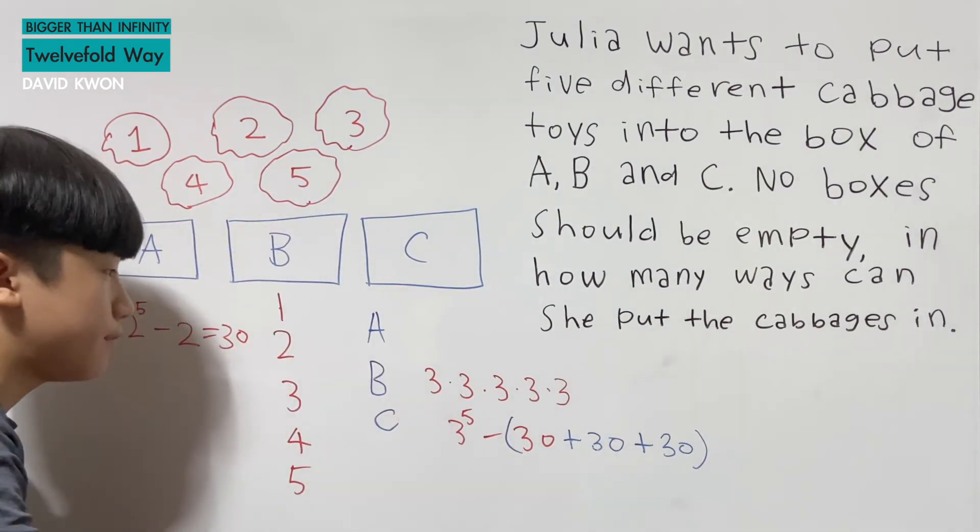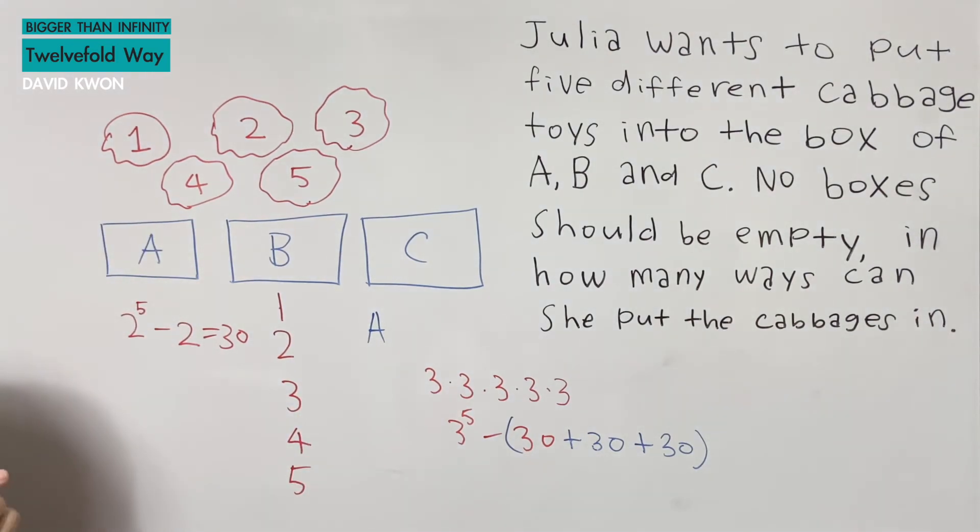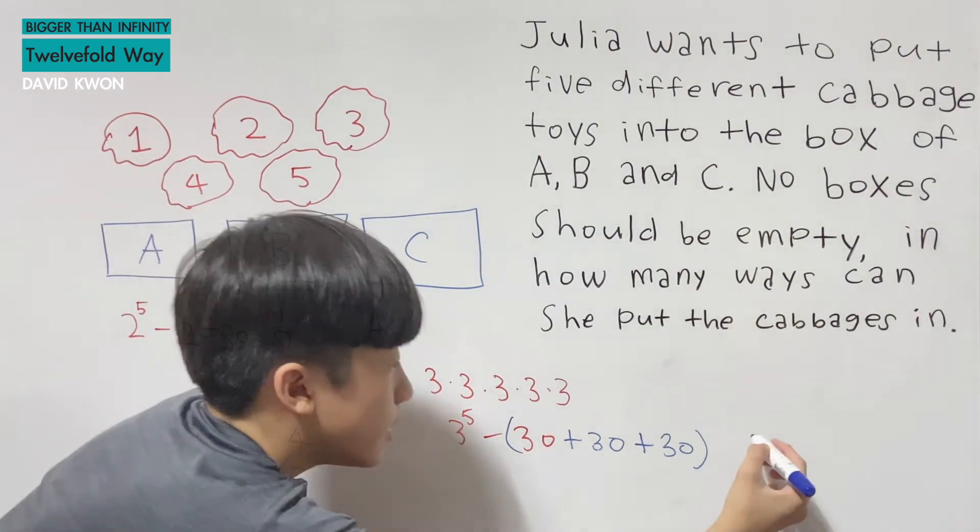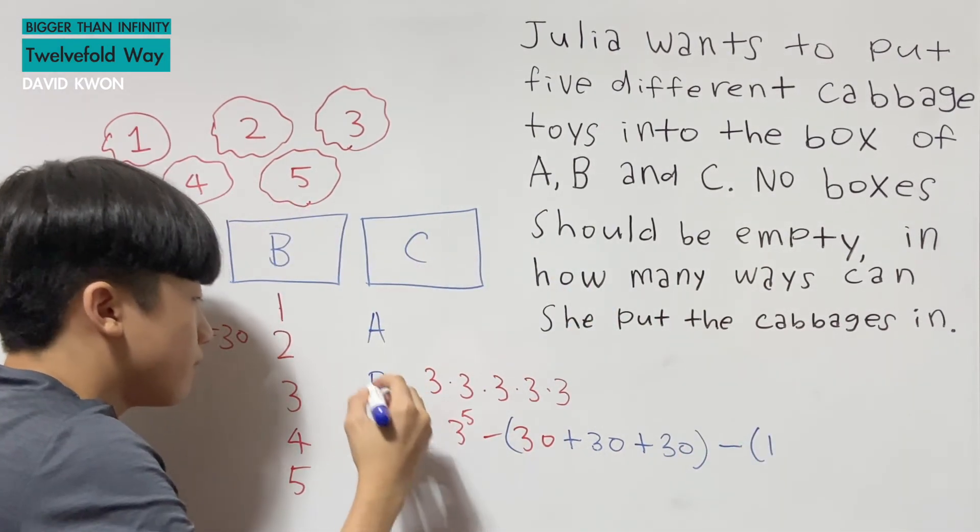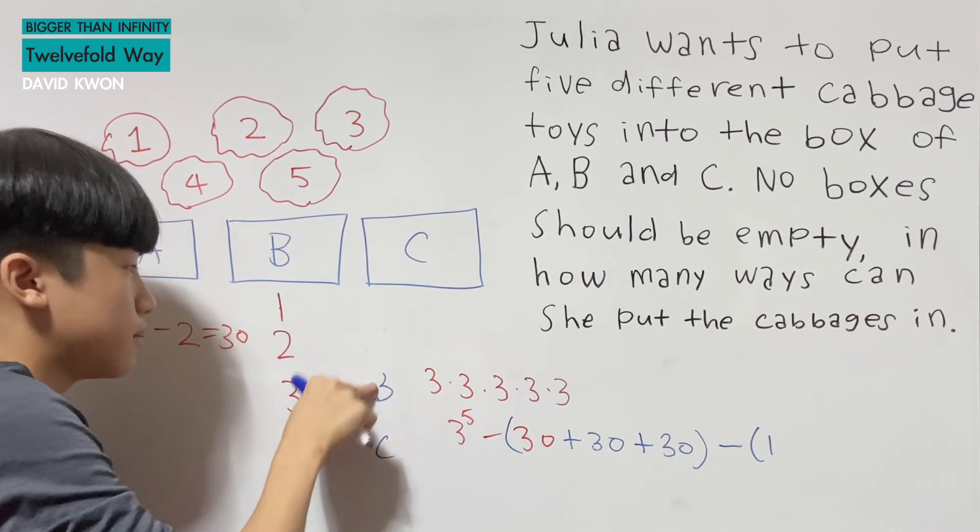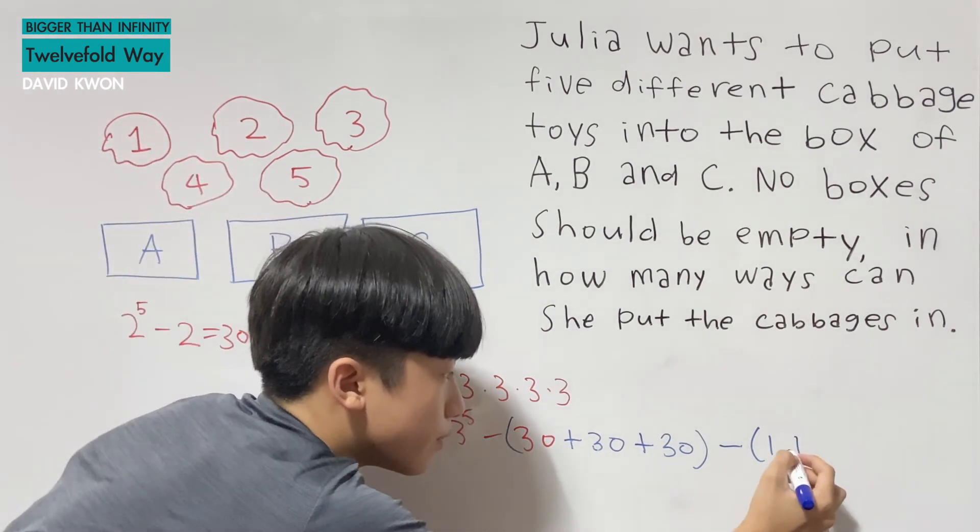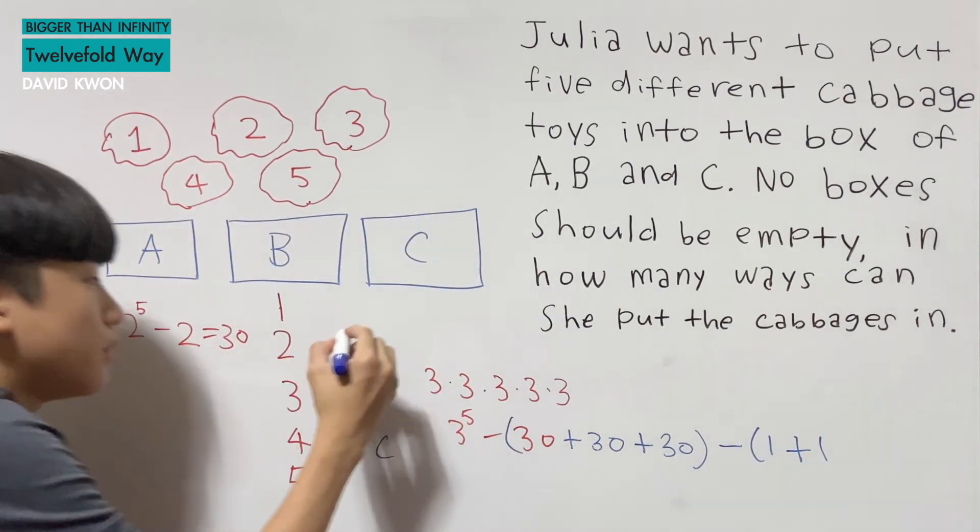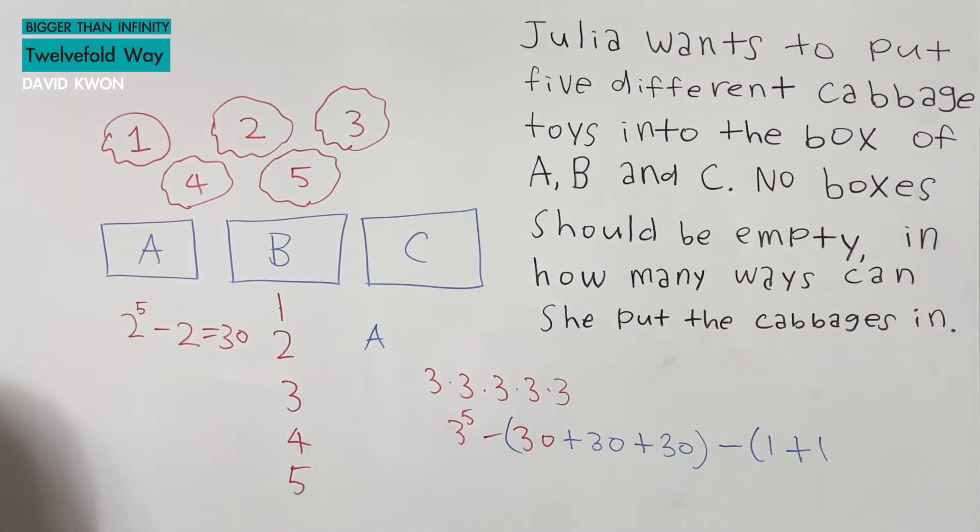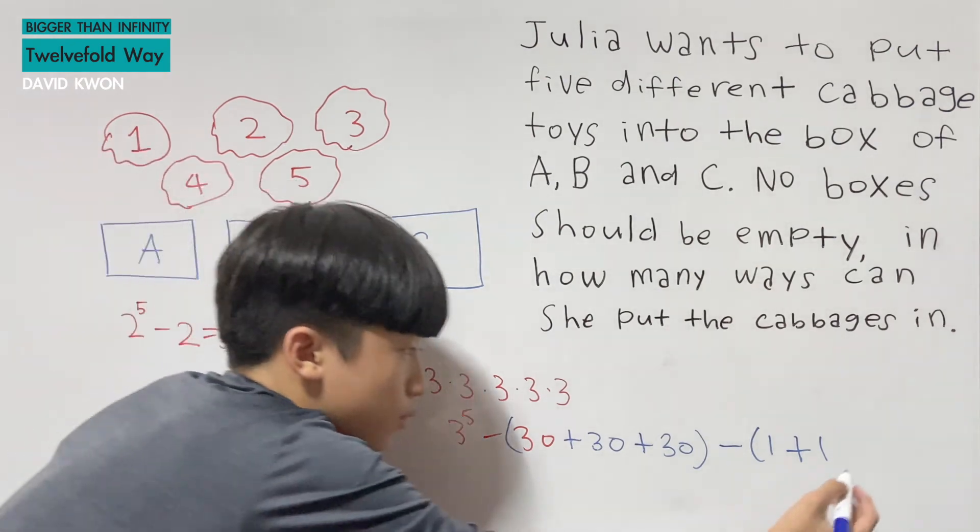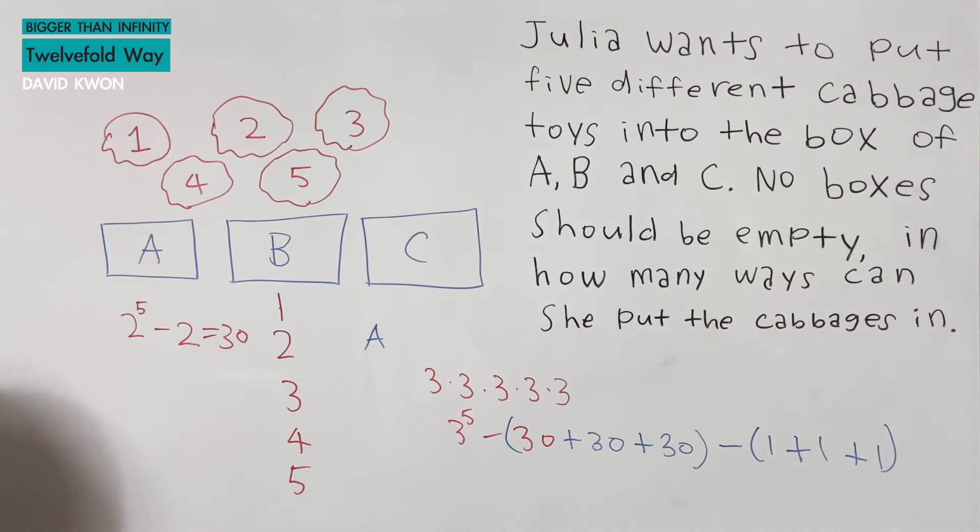And also, what if we say that B and C was gone? So every number goes to A. And that is another minus one. And this time, A and B is gone. So every number goes towards the box C, and that is another when we subtract. And now, if B and C is gone, we have A, and that's another thing that we subtract by.